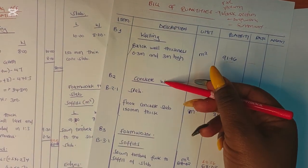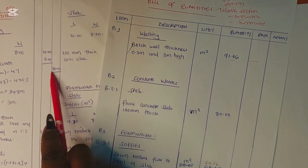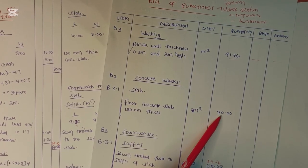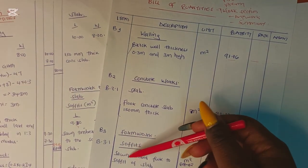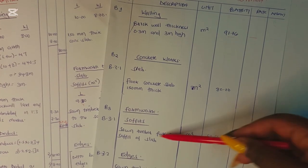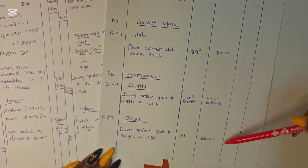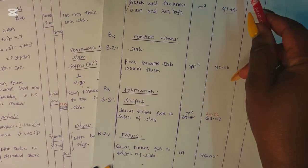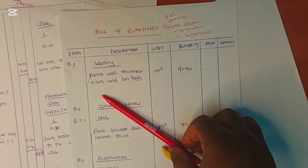For the concrete, you book it separately from the walling. The entry is: floor concrete slab, 150 millimeters thick — unit is square meters, quantity is 80. Then for formwork we have: timber formwork to the soffit of the slab — quantity 69.56 square meters. And timber formwork to the edges of the slab — unit is linear meters, quantity is 36. You insert the rates and amounts, total them up, then add the totals from the preliminaries and preambles for the work section summary.